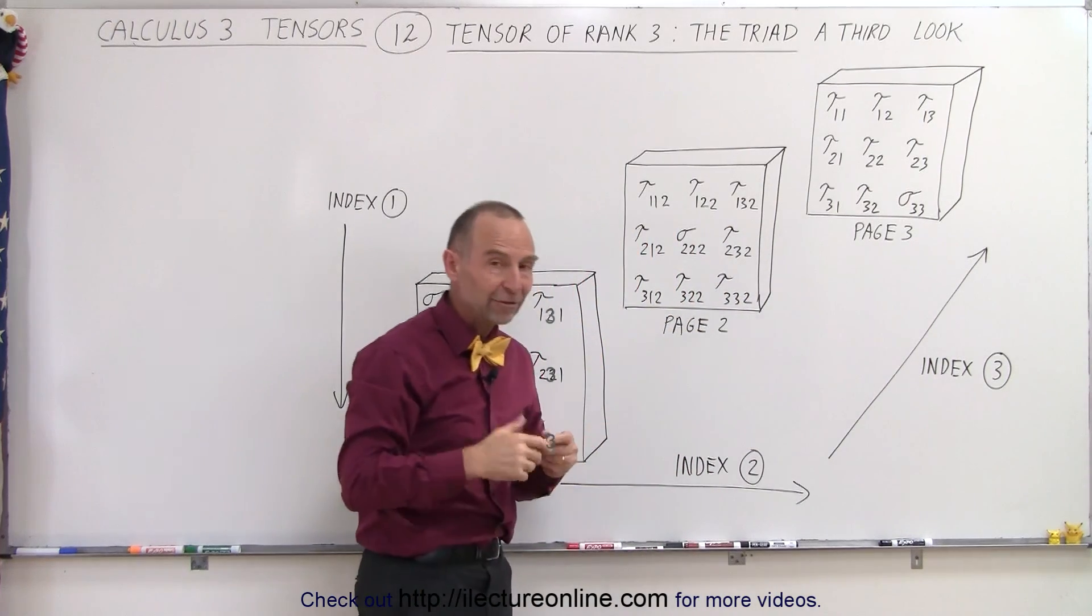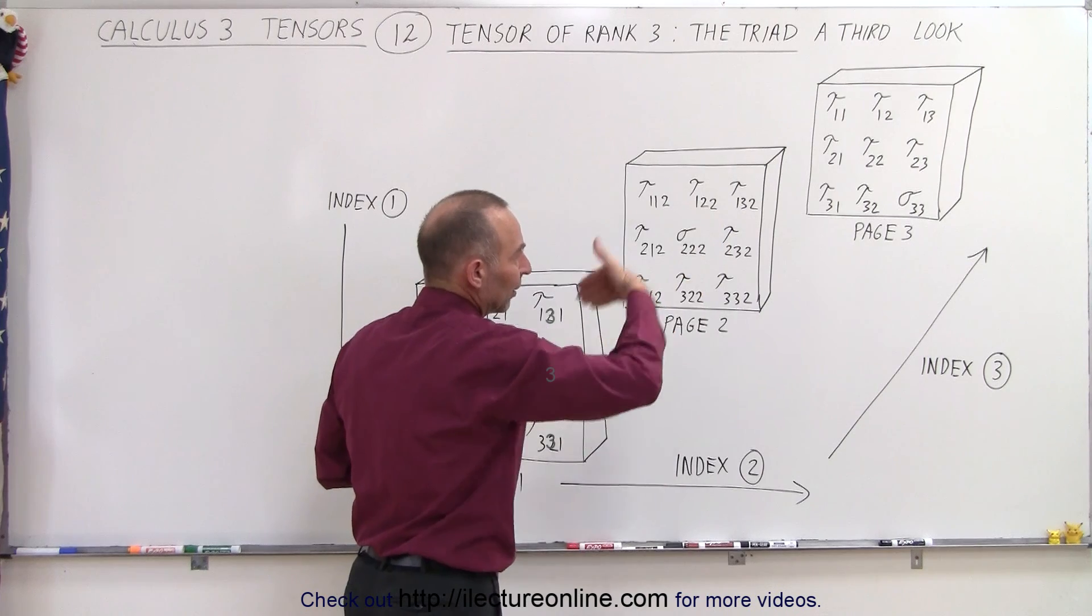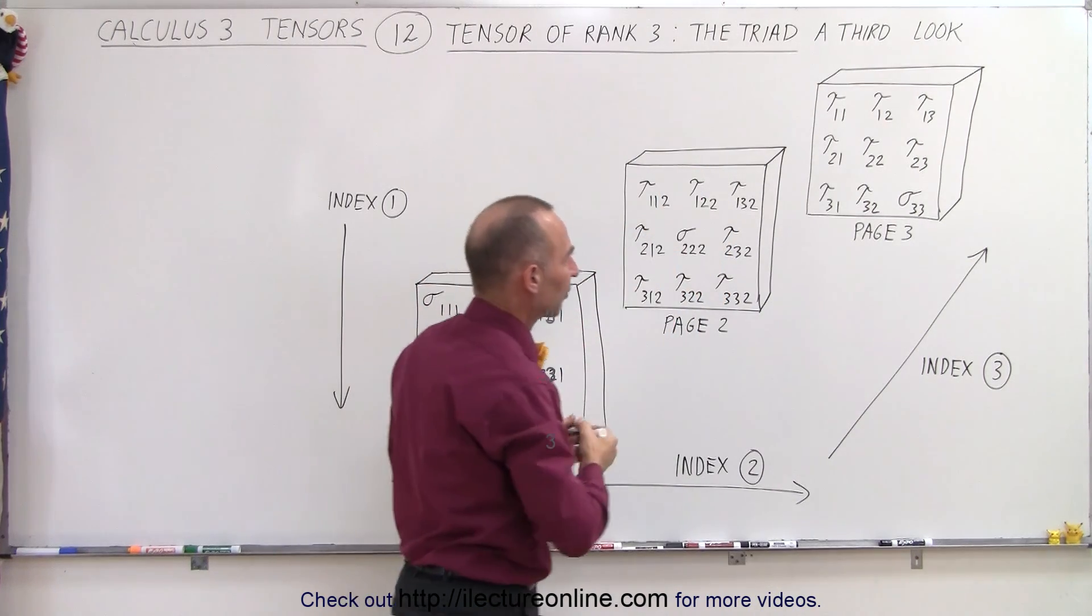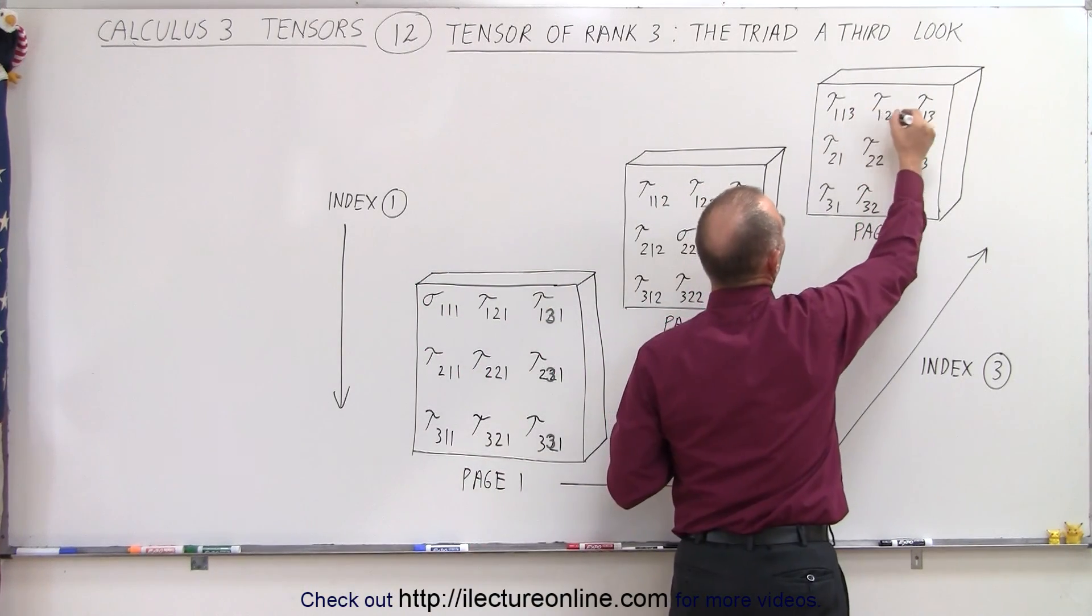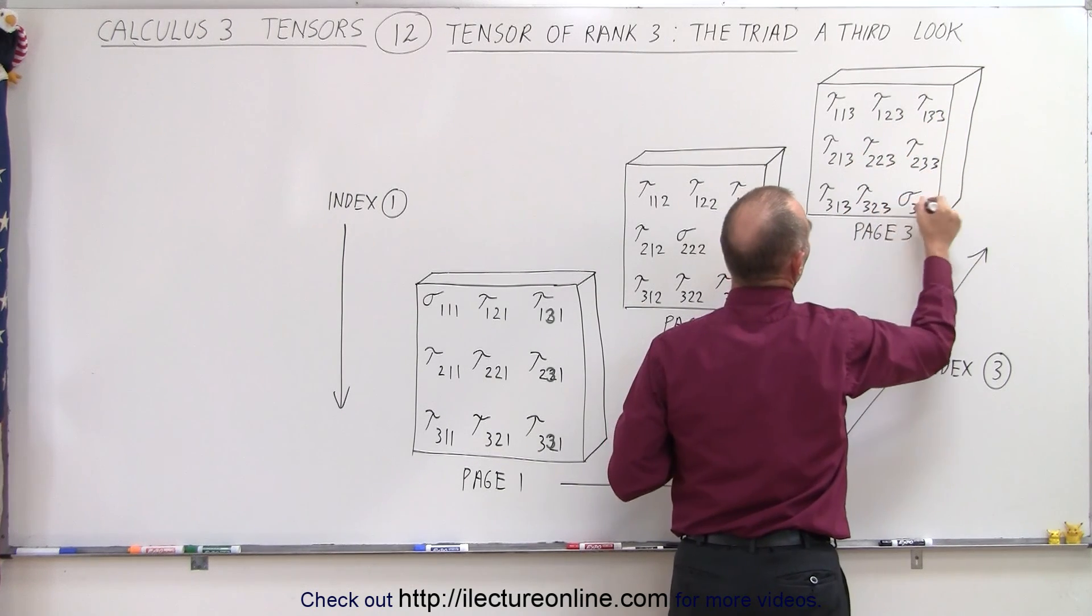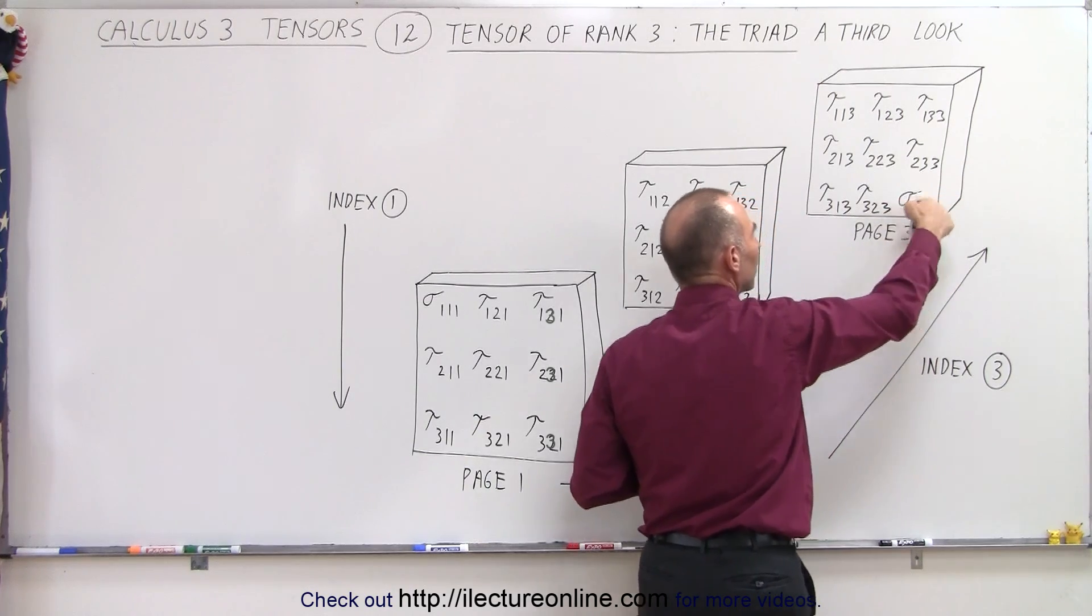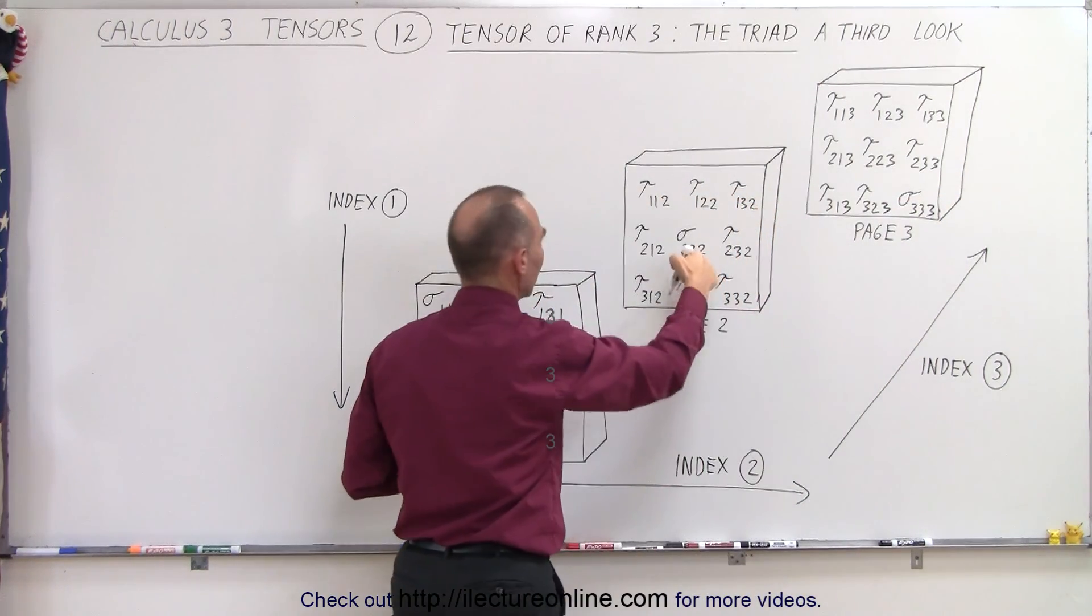And now we have the page - the third page. Since this is now the third page from front to back, the third index all of them should get a three. So that makes that easy: three, three, three, three, and three, three, three, three. Here again we have the third element with all threes, the second element here with all twos, the first element all ones.